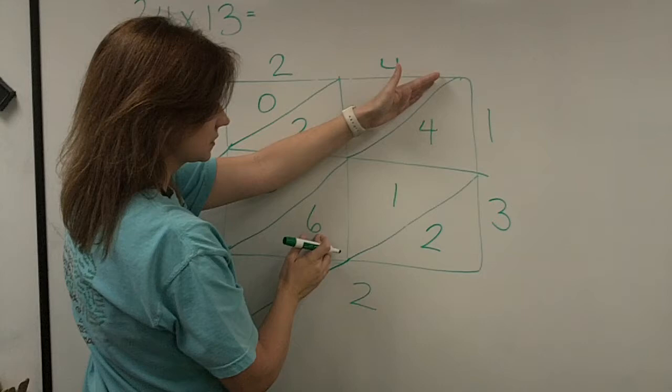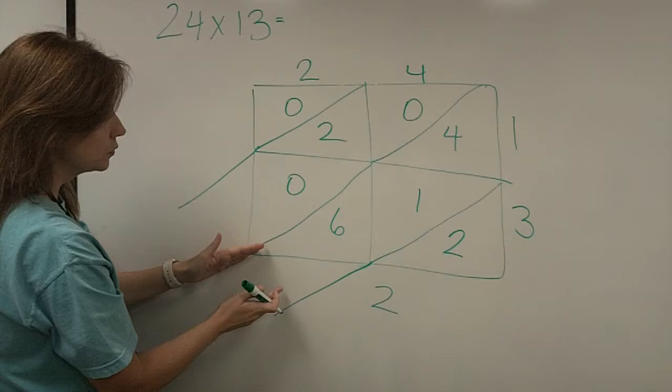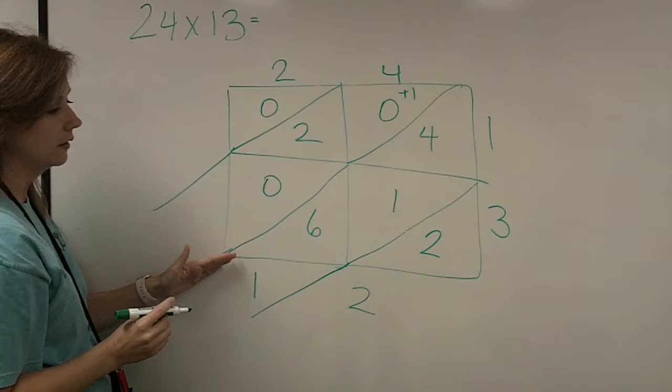Now, I'm going to this diagonal. I have 4 plus 1 plus 6. Well, 4 plus 6 is 10, and one more is 11. And we're going to regroup, just like we did with standard algorithm. We're going to put a 1 here, and I'm going to regroup in that diagonal the next one, the 11.